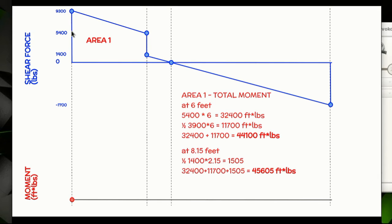If you're finding the area of a rectangle, it's length times width, so we get this number for this area. If you're looking at a triangle, it's one-half times base times height, which gives us this number for this little triangle. Add those two together, we know at 6 feet it's 44,100 foot-pounds. Then we're going to go from there to 8.15 feet, so we're going to add this triangle, which is one-half your base times height, which is your 1,400 times 2.15, so you end up with 1,505 pounds. Add all of those together and you find that the total moment at this point is 45,605.